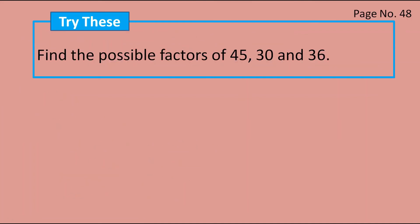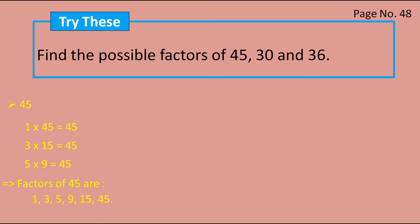Next, on page number 48, there is a box called 'Try This' with one question: find the possible factors of 45, 30, and 36. Let's take the first number, 45. One is the factor of every number, so 1 × 45 = 45. Next, 3 × 15 = 45. Next, 5 × 9 = 45. We can't find 45 in any other table. So the factors of 45 are 1, 3, 5, 9, 15, and 45.